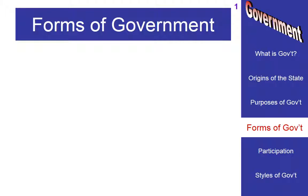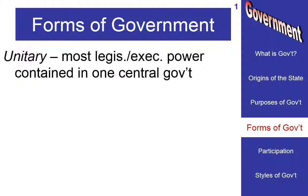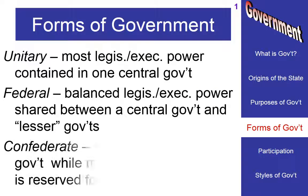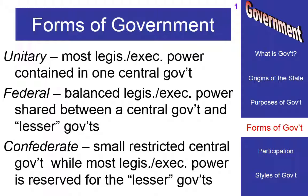So how can we describe or differentiate different governments? There are different ways that we can describe them. First of all, we can describe where the power is located in the government process. Is all the government power located in one group of people that control the entire area? We would call this a unitary style of government.